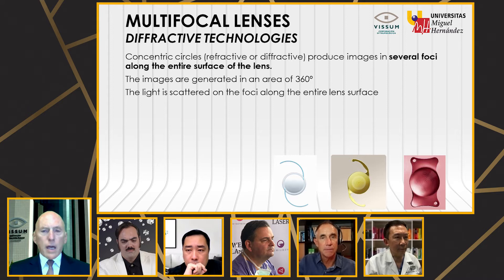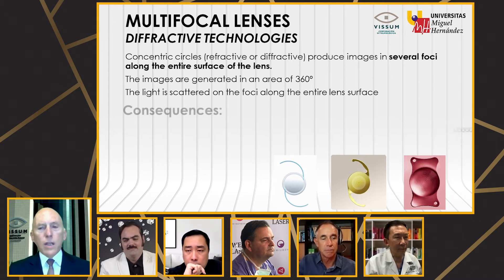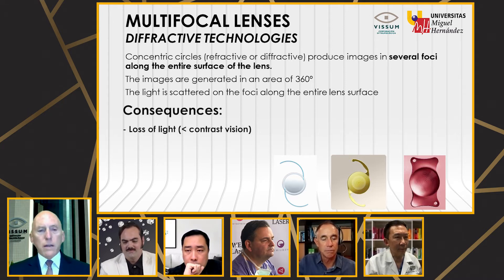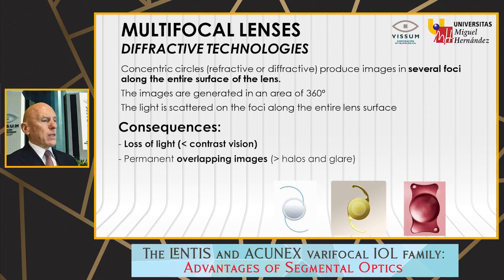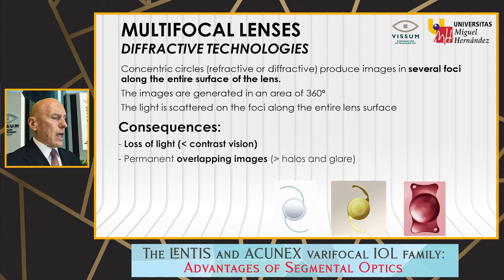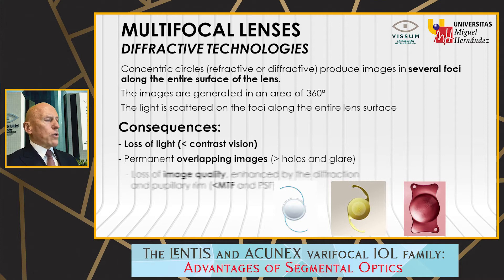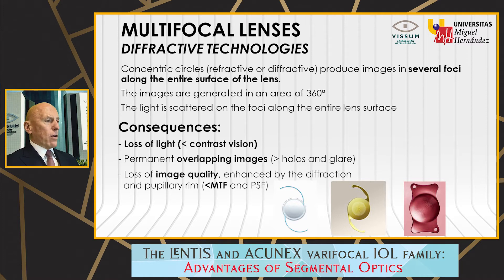Diffractive technologies must be mentioned again because they have distinctive disadvantages, such as loss of light with less contrast sensitivity. The average light loss is about 12% to 17%, depending on the model. They cause a permanent overlapping of images, which creates halos and glare — a consequence you will find in every type of diffractive lens. As a result, you have a loss of image quality, enhanced by diffraction and pupillary effects. These are the main pitfalls of diffractive technologies.